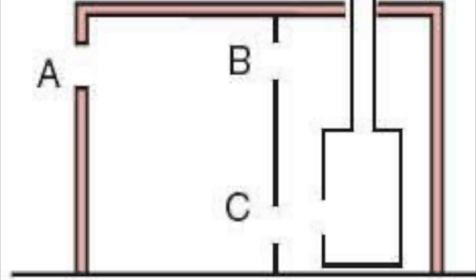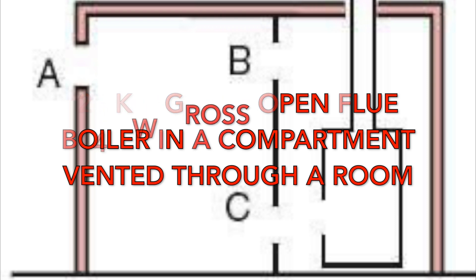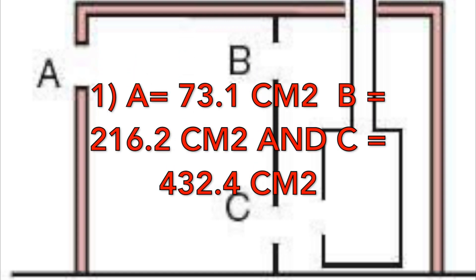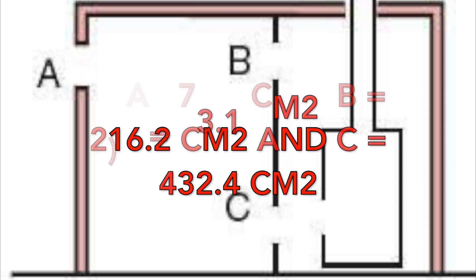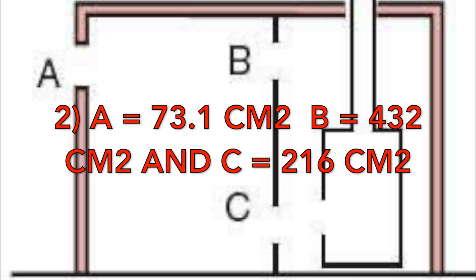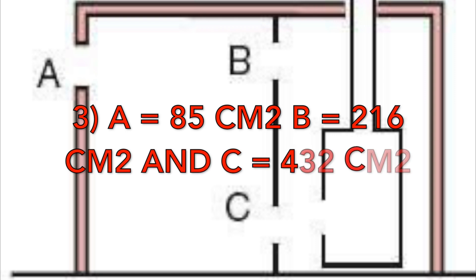The final question, number ten: we have a 24 kilowatt gross open flue boiler installed in a compartment which gets its air for combustion via another room. What ventilation is required at A, B, and C? Is it 1) A=73.1, B=216, C=432; 2) A=73.1, B=432, C=216; or 3) A=85, B=216, C=432?